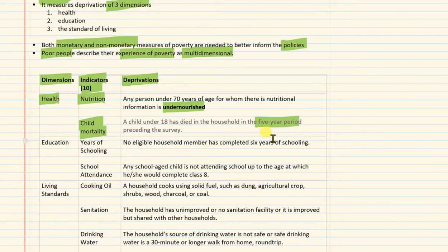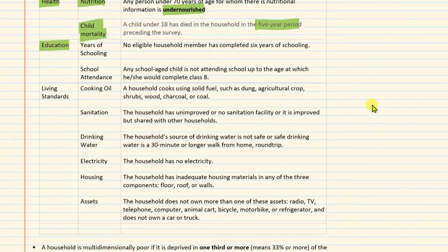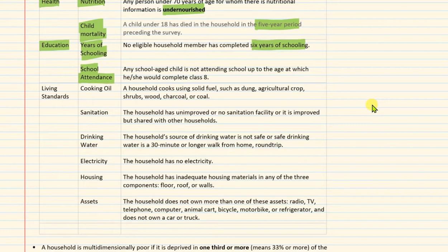For the education dimension, there are also two indicators: years of schooling and school attendance. For years of schooling, a household is deprived if no eligible household member has completed six years of schooling. For school attendance, deprivation is measured as: any school-age child is not attending school up to the age at which he or she would have completed class eighth. If a child is not attending school, then that household will be termed as deprived in terms of education.